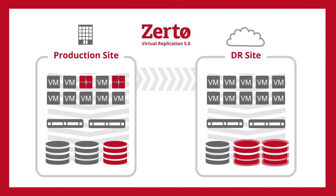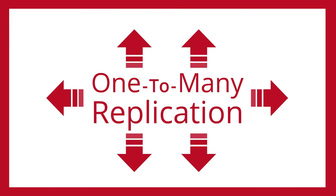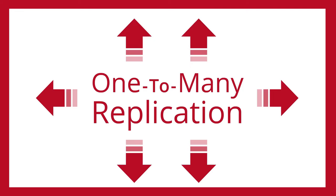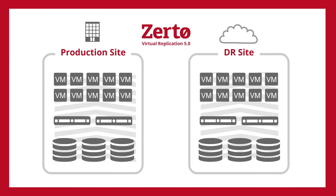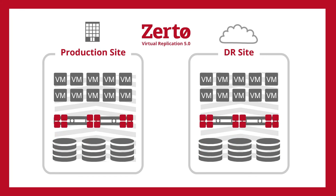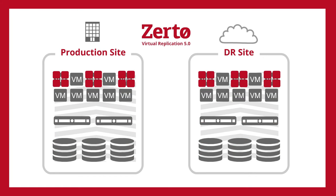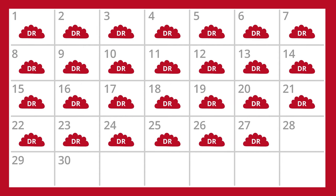By continuously replicating VM block level changes from the hypervisor, Zerto enables one-to-many replication with seconds of data loss and no snapshots between any storage and automated recovery in minutes, directly to production or a DR site from any point in time in the last 30 days.